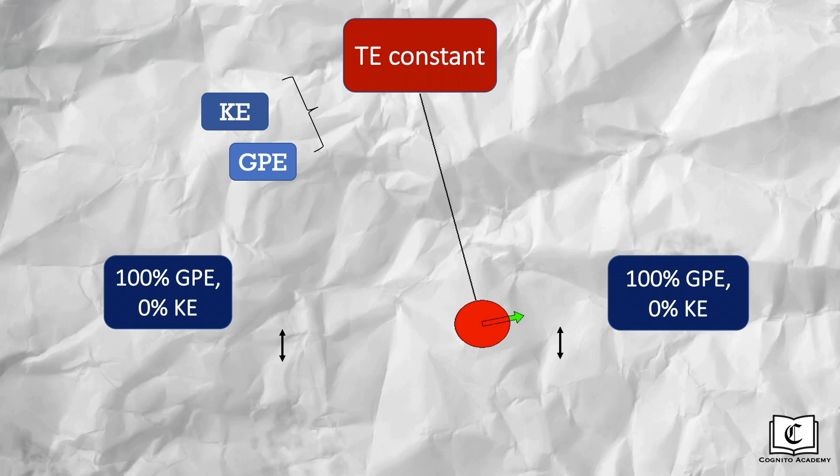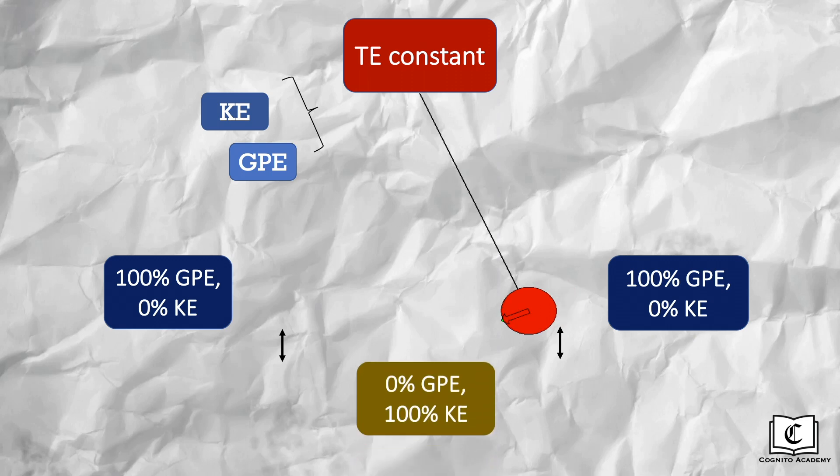In contrast, right in the middle of its swing at its lowest point, the pendulum is at its lowest height. Hence, its gravitational potential energy is zero. Therefore, all of its energy must come from kinetic energy. And this is true as this is the point where the velocity of the pendulum is the fastest.